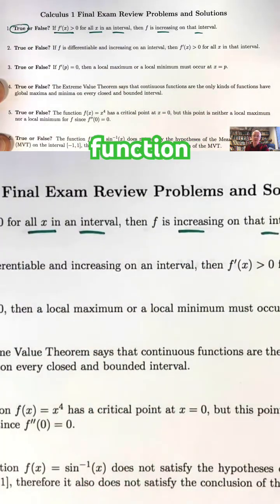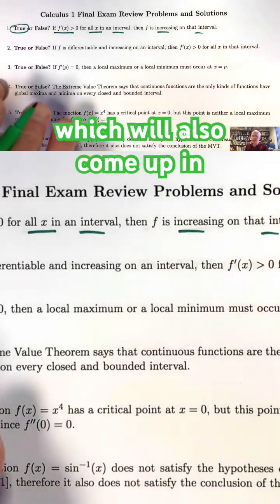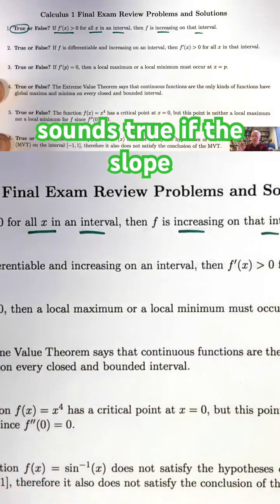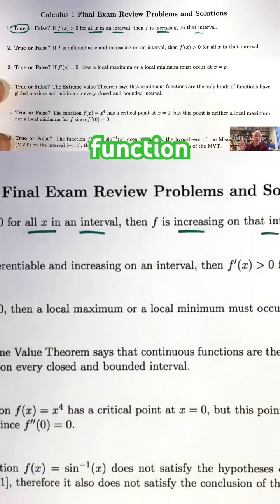It's called the increasing function theorem. You can look it up. It's based on the mean value theorem, which will also come up in these questions. You can prove it with that. It certainly sounds true. If the slope of tangent lines are always positive, the function should be going up.